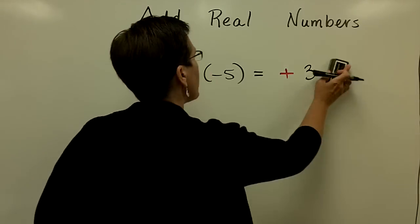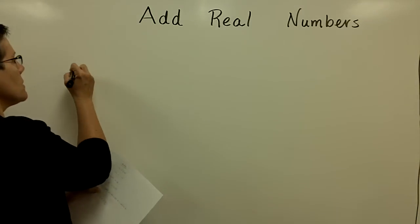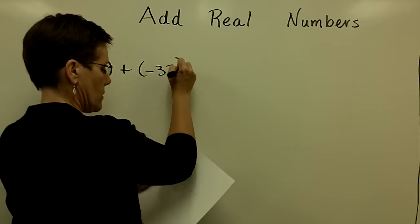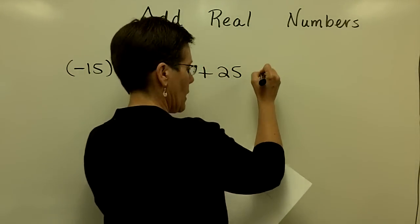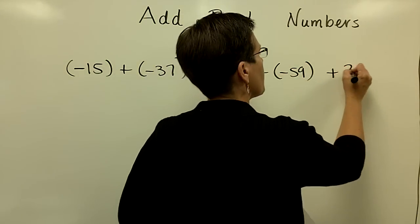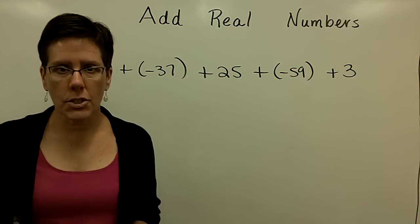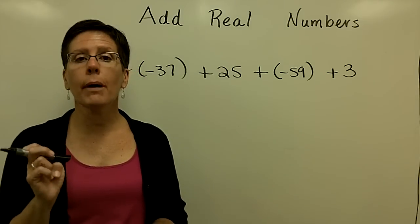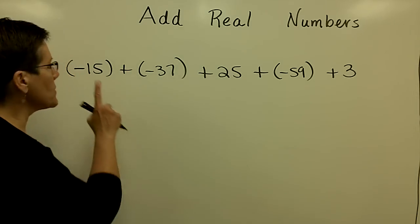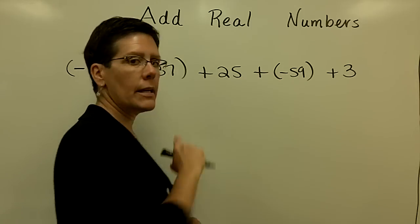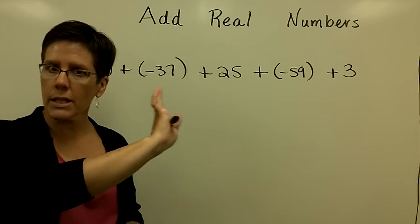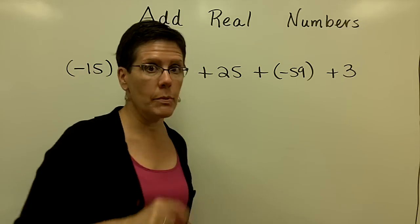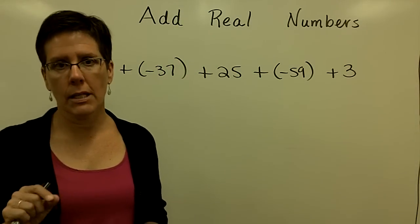Let's look at one with multiple values — about 5 numbers to add. Let's take negative 15, add negative 37, 25, negative 59, and 3. Order of operations says I should work left to right. But if you'd like to combine all terms that have like signs — those three negative numbers together and the two positive numbers together for a total of 28 — because this is a purely addition problem, you're welcome to do that. Then work with those two values to get your solution.